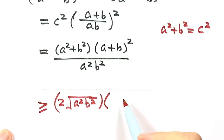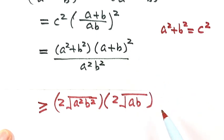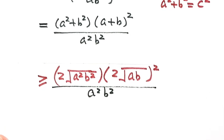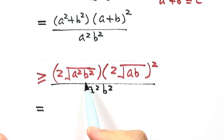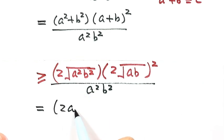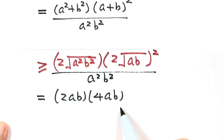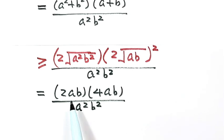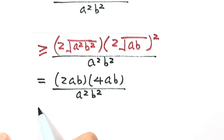Now let's simplify. The numerator gives 2ab from AM-GM on (a² + b²), and (a + b)² gives another factor using AM-GM. Combining: on top we have 4ab times (a + b)², and the bottom is a²b². Because a and b are bigger than zero, 2√(a²b²) simplifies to 2ab. So the top gives 4ab, and after the a² and b² cancel with the bottom, we get just 8.